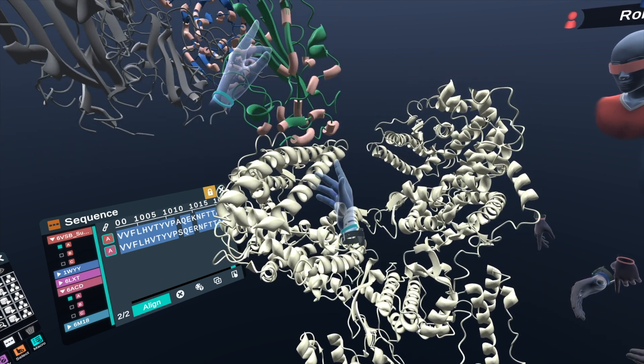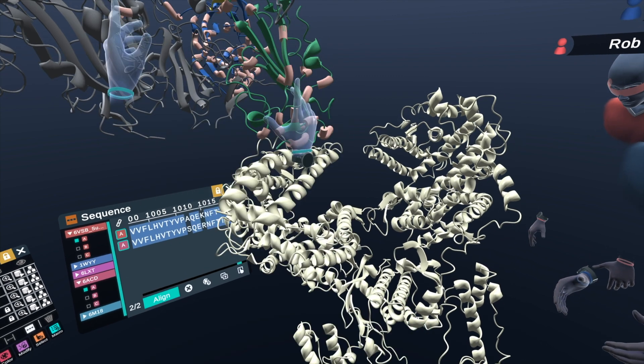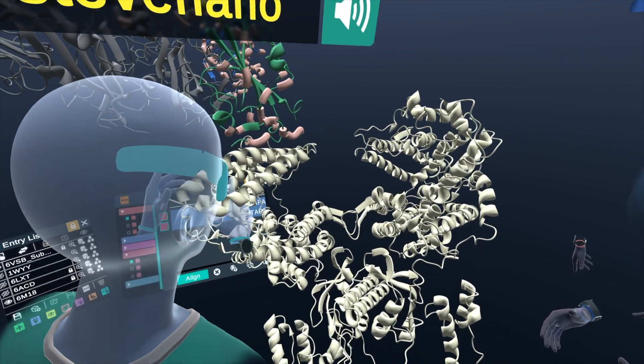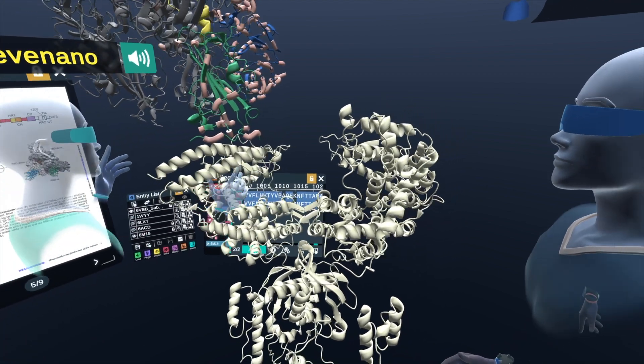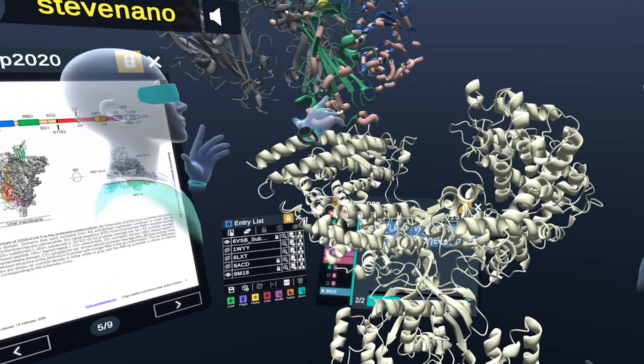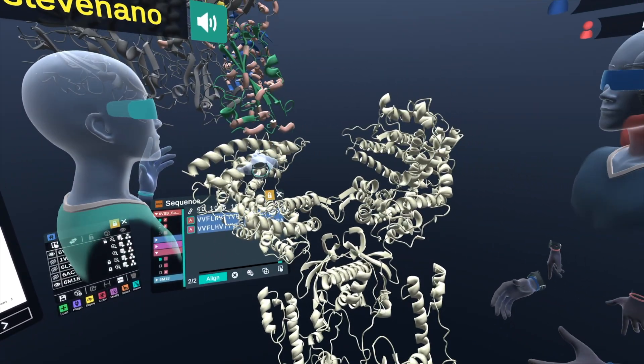However, the main way that we're going to be looking at it today is how it binds. The interface here between the green receptor binding domain of the spike protein and the white area, which is this main alpha helix area here, is thought to be the area where there is a very high binding affinity between the spike and ACE2.